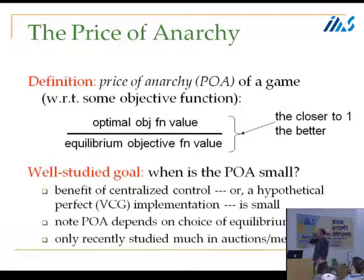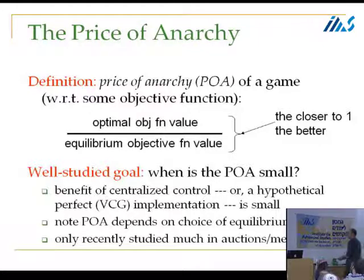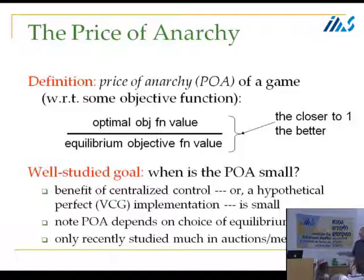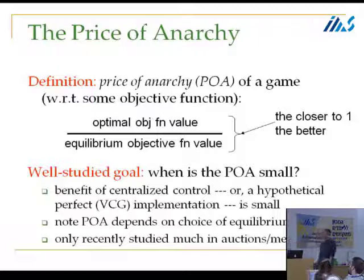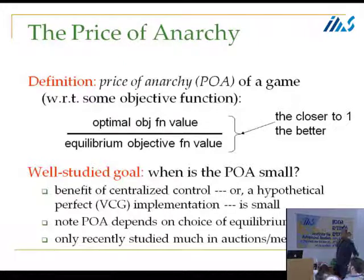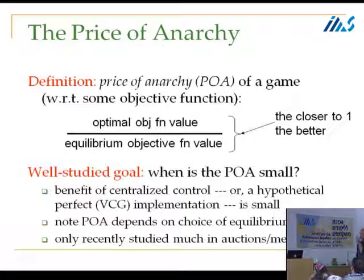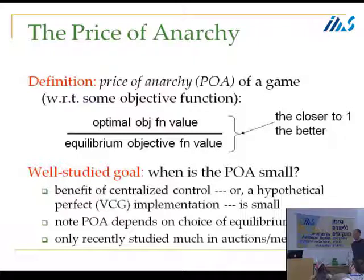To measure welfare loss at equilibrium I'll use the very much alive and kicking price of anarchy — the ratio between the hypothetical maximum welfare you could achieve (the numerator — what you'd get with the extravagant resources required to run VCG) and the welfare at equilibrium (the denominator). We look at the worst case over some set of equilibria — pure, Bayes-Nash, etc. We'd like this ratio to be close to one, meaning if your game reaches an equilibrium, you're not losing much relative to a perfect VCG implementation.